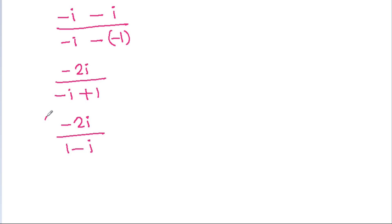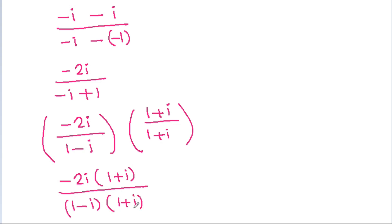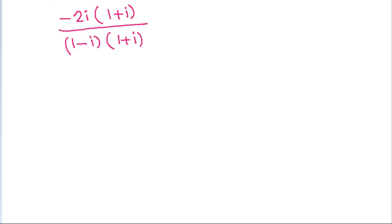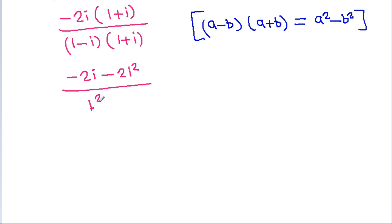If we multiply and divide by 1 plus A, it is minus 2A times 1 plus A, divided by 1 minus A times 1 plus A. And since A minus B times A plus B equals A squared minus B squared, minus 2A times 1 is minus 2A and minus 2A times A is minus 2A squared, divided by 1 squared minus A squared.